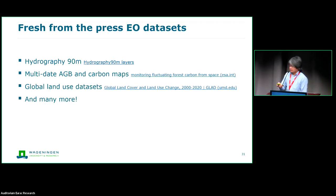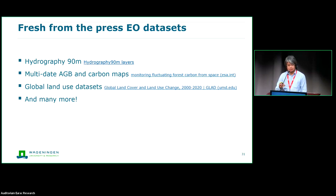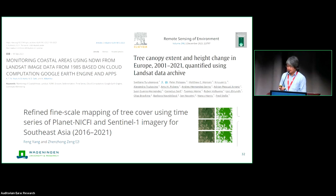Just to highlight some recent EO datasets of utmost importance for ecosystem accounting — particularly for water regulation modeling there's a certain DEM, carbon biomass maps as condition indicators, global land use datasets from the Maryland group, and many more. I also browsed some very recent datasets that could be useful for EO-EA — fresh from the press, I would say.